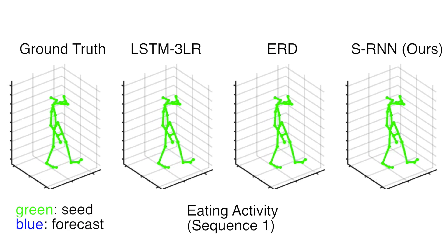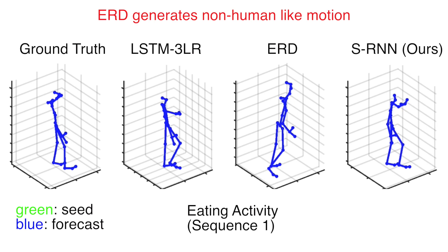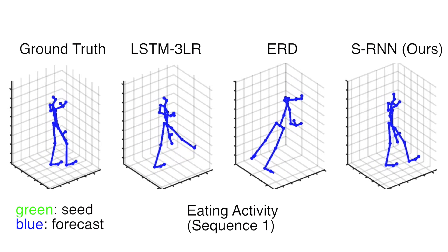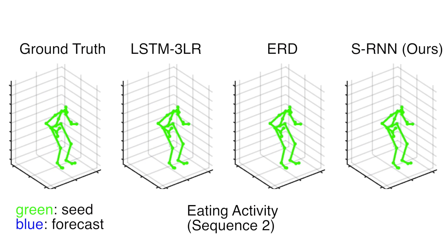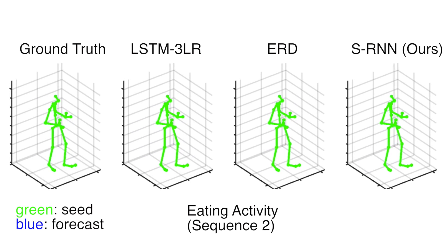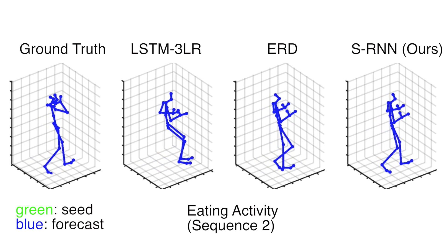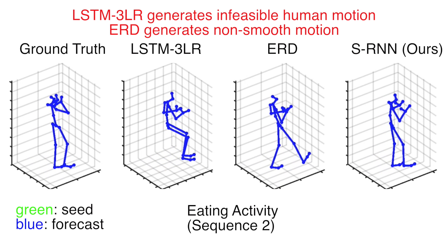In motion forecasting, sRNN does particularly well on complex aperiodic activities such as eating, smoking, and discussion. sRNN enjoys an underlying structure which allows it to model complex interactions between the body parts.